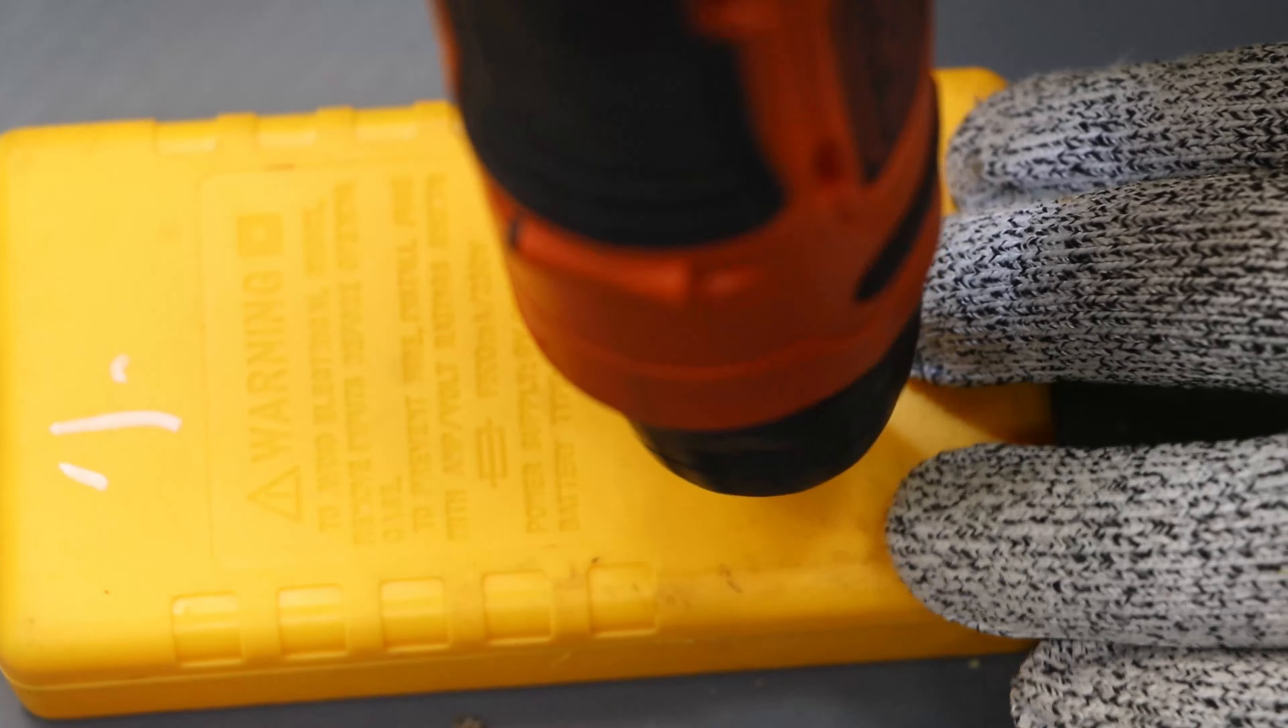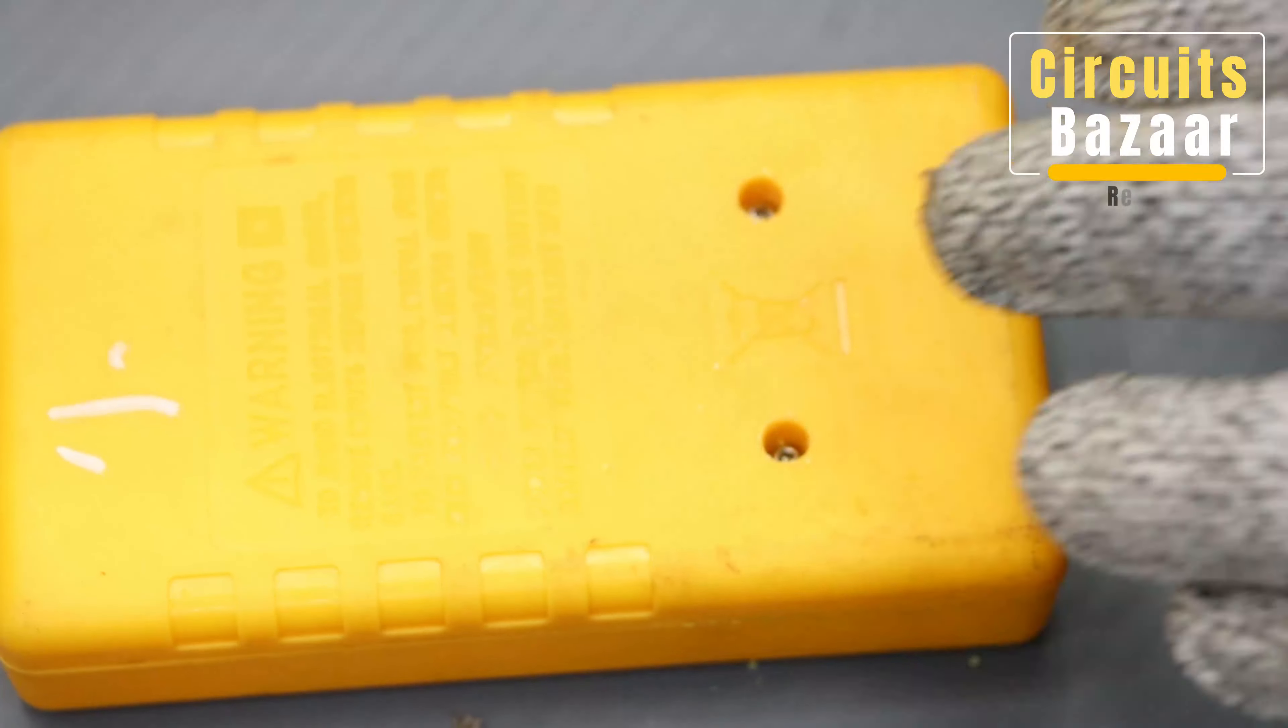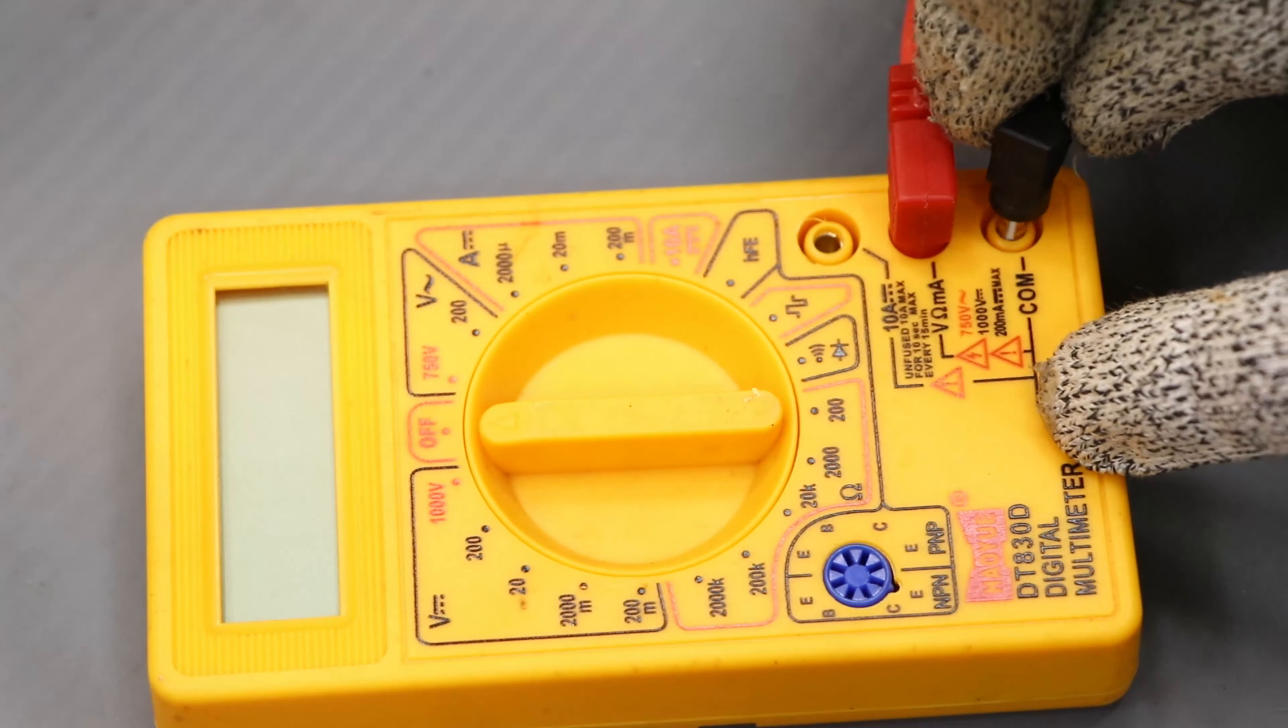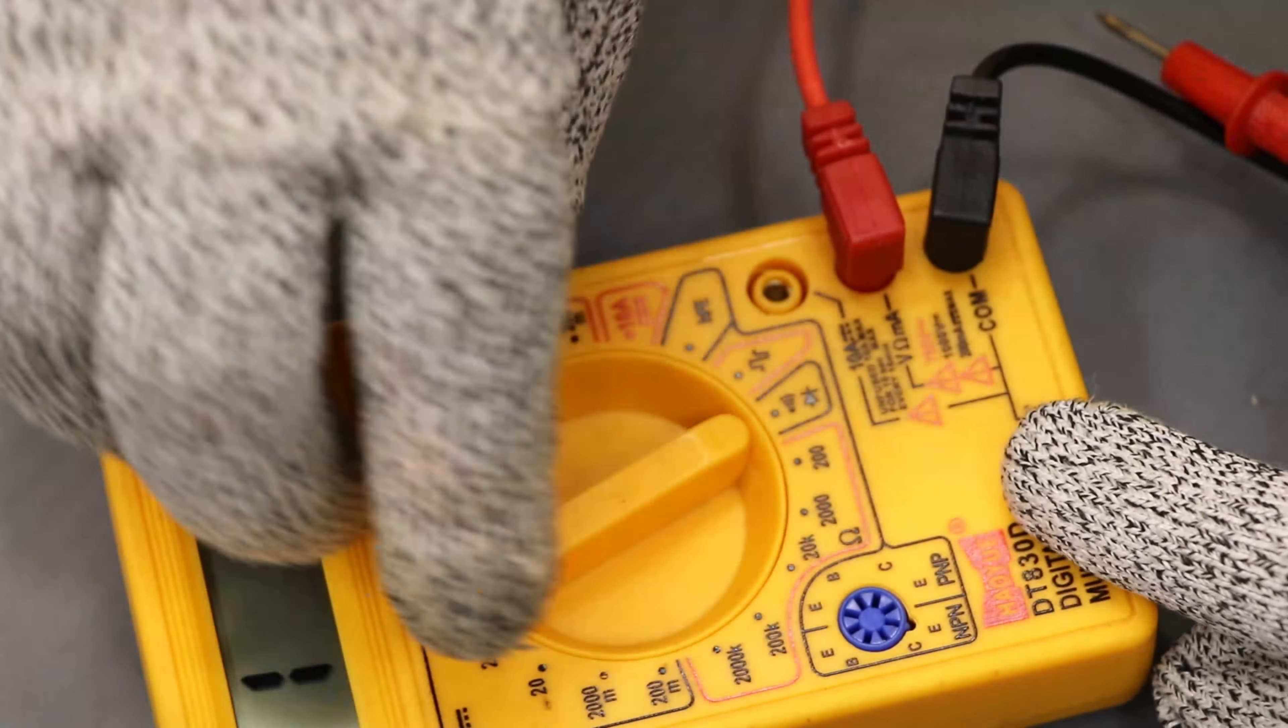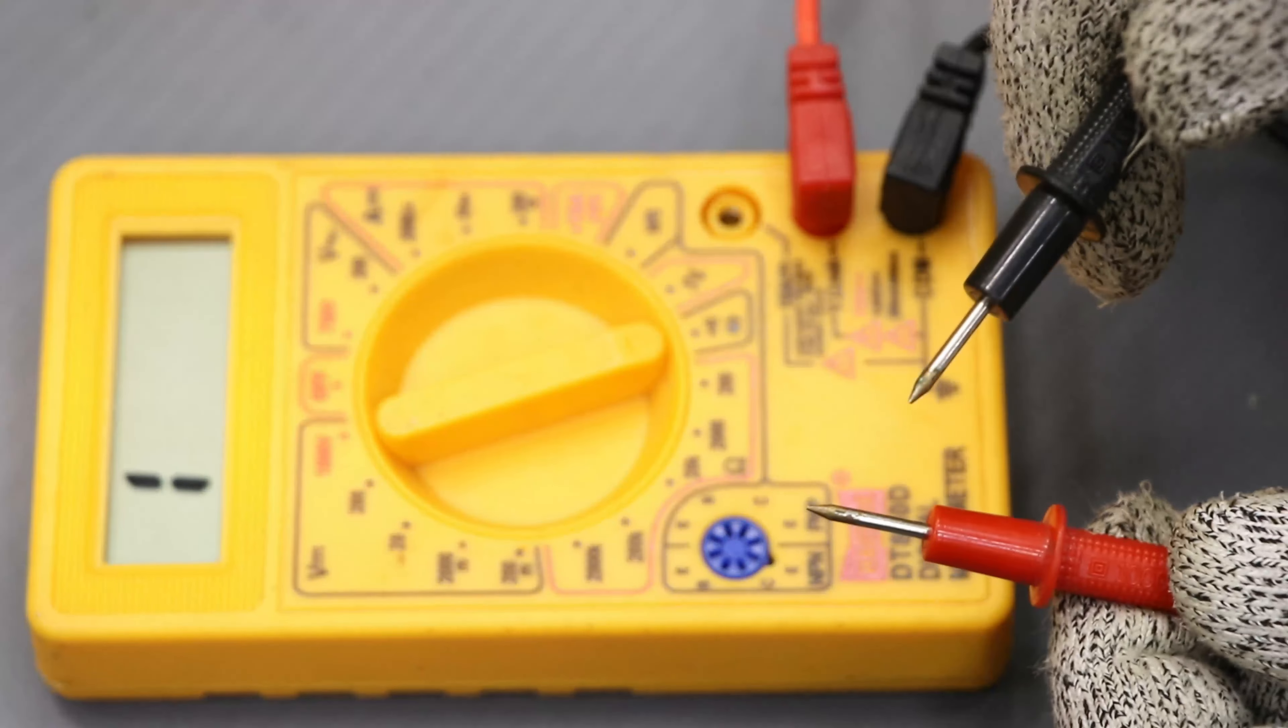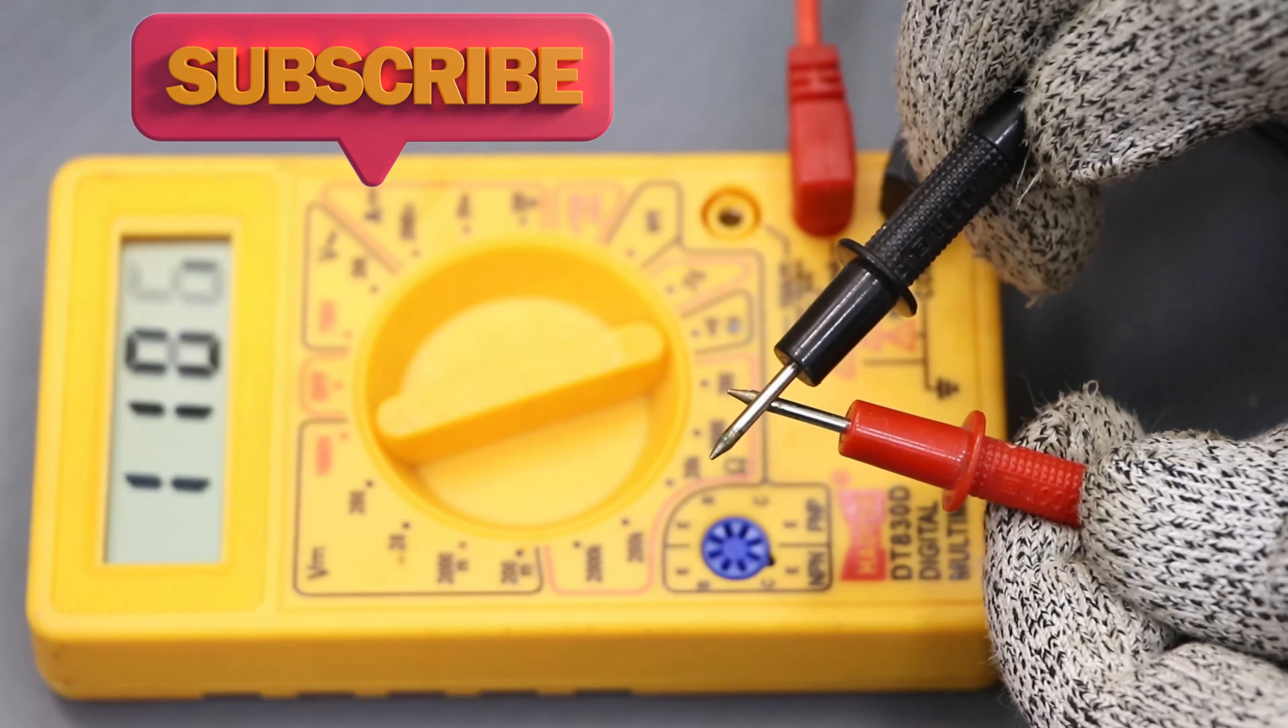Just again apply the leads so that you can measure some vital parameters of the components. So now we are going to set the multimeter on the continuity setting. So just test it. Now you can see it's working perfectly.